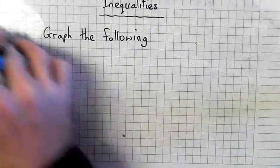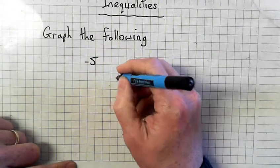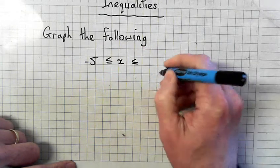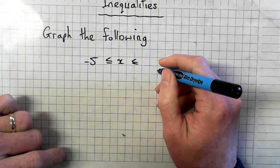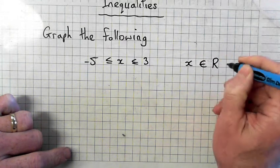And we'll look at another one. Part 3. So minus 5 less than or equal to x, less than or equal to 3, x in element of R.